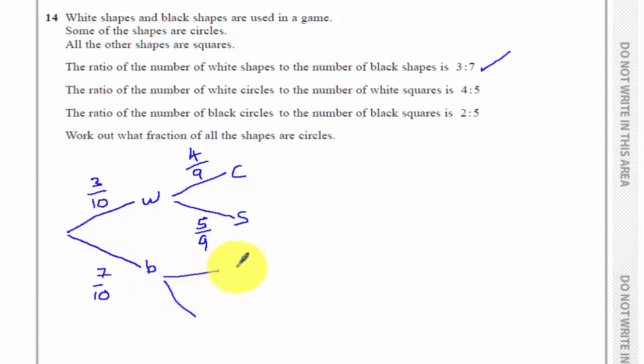The black shapes, there's also circles and squares. Two sevenths of the black shapes are circles, which means five sevenths are squares.